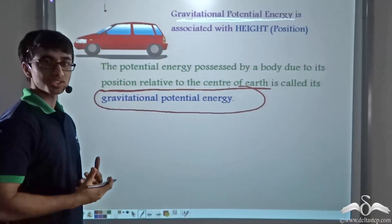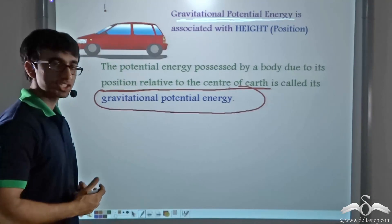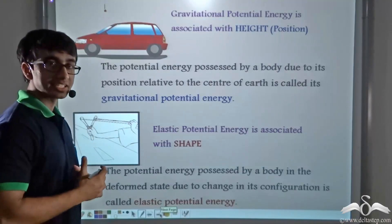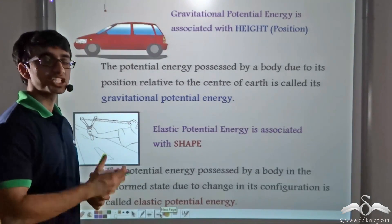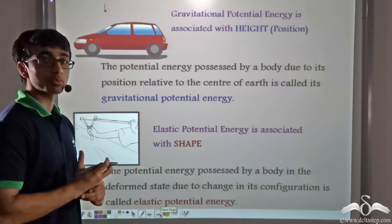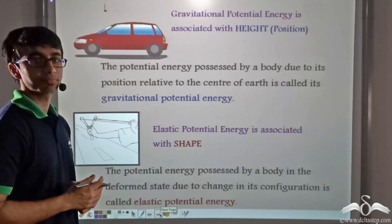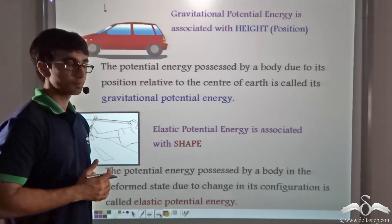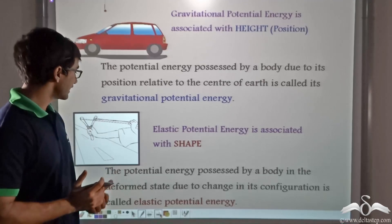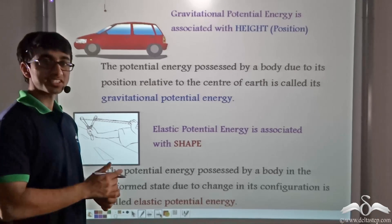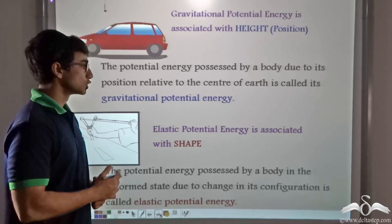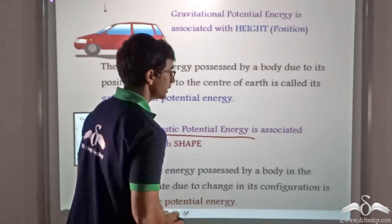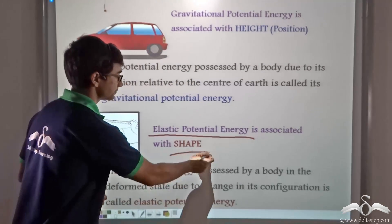We also studied about another kind of potential energy. This potential energy came into being when the shape or configuration of an object was changed. In the case of the bow, we were stretching the string of the bow, and in the case of the catapult, we were stretching the string of the catapult. This is known as elastic potential energy, which is associated with shape.